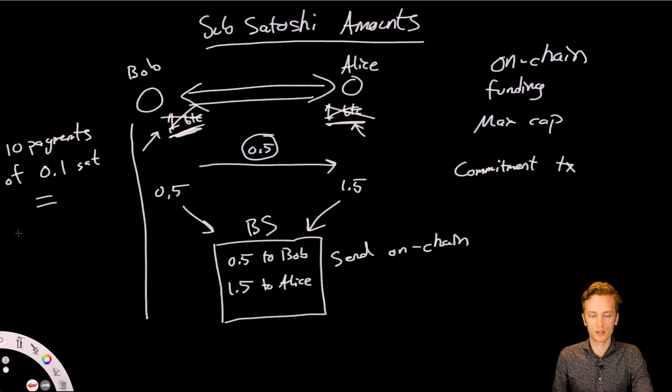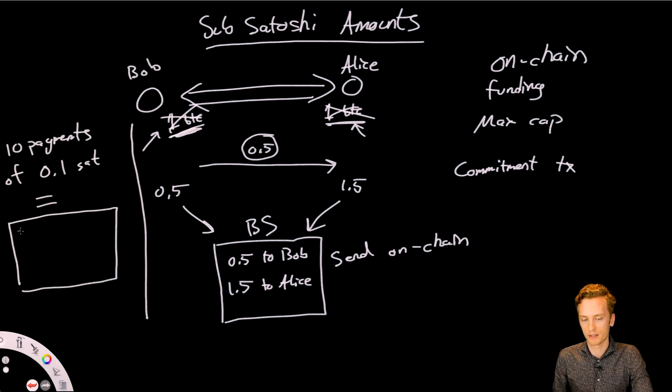But then, in the end, the balance sheet would be updated. So in the end, the balance sheet between Bob and Alice, it would look like this. So Bob would have 1 BTC minus 1 Satoshi. I don't want to do all of the zeros and write this in Satoshi, but he would have almost 1 Bitcoin. And Alice would, of course, have 1 BTC plus 1 Satoshi. And then, that would be the balance sheet that actually settles.